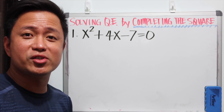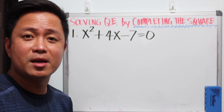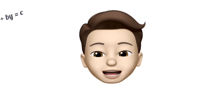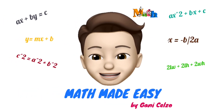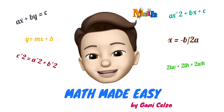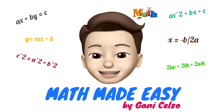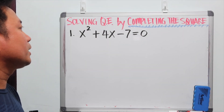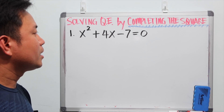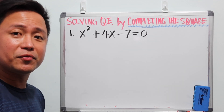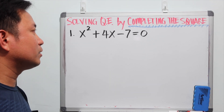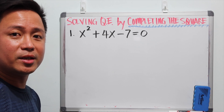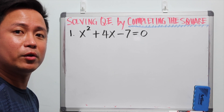What will you do if the quadratic equation is not factorable? Can you think of other methods to solve for the zeros of that quadratic equation? Let us consider this example: x squared plus 4x minus 7 is equal to zero. This quadratic equation is not factorable because we cannot think of factors of negative 7 that will give you a sum of 4. So this quadratic equation cannot be solved using factoring.